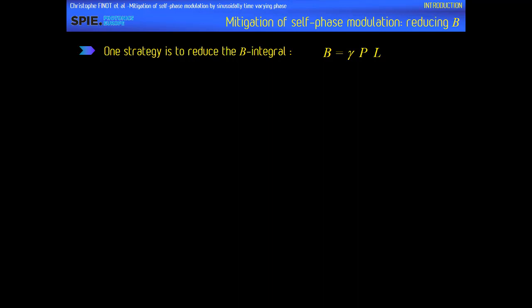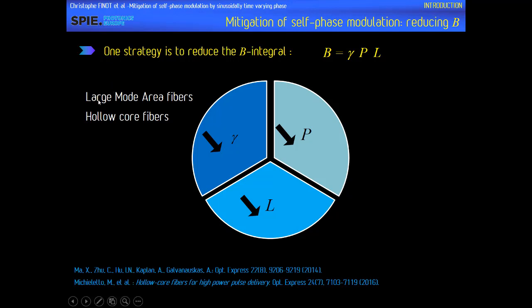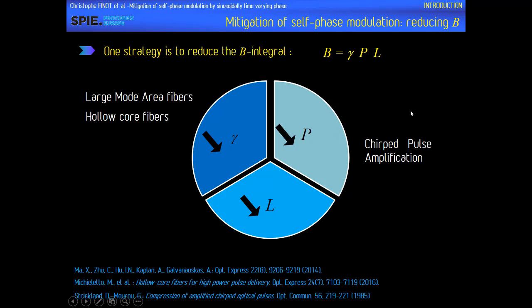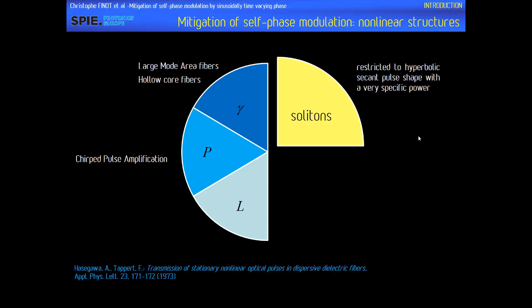The most natural way to mitigate SPM is to try to reduce the B integral. You can do this, for example, by reducing the gamma coefficient — this is the idea of using large mode area fibers or hollow core fibers where the pulse propagates in air with low nonlinearity. You can also try to decrease the input peak power; this is the principle of chirped pulse amplification, which has been very successful in the field of fiber amplification.